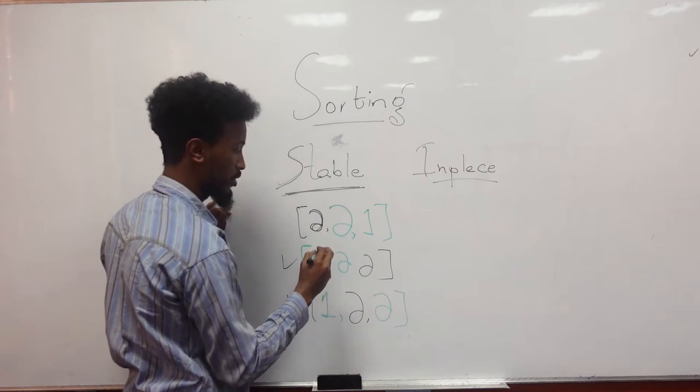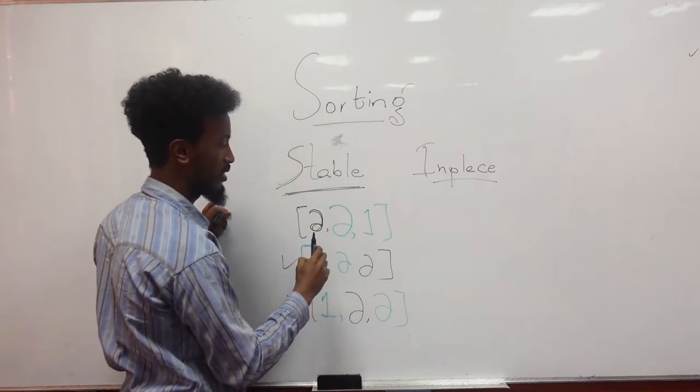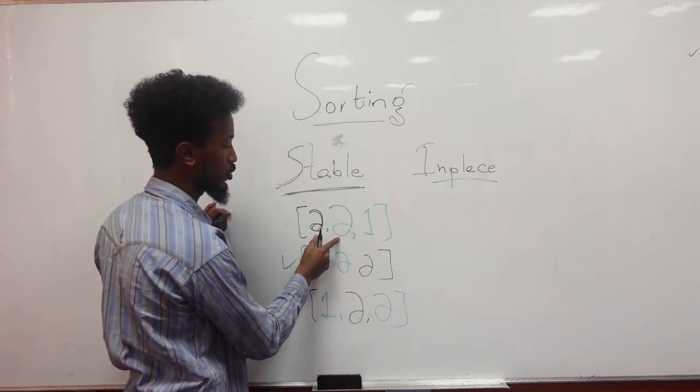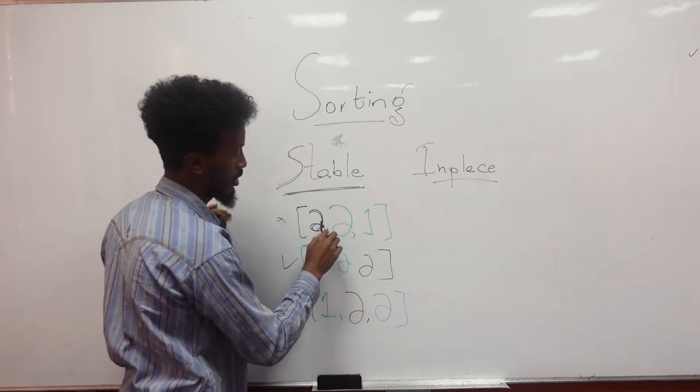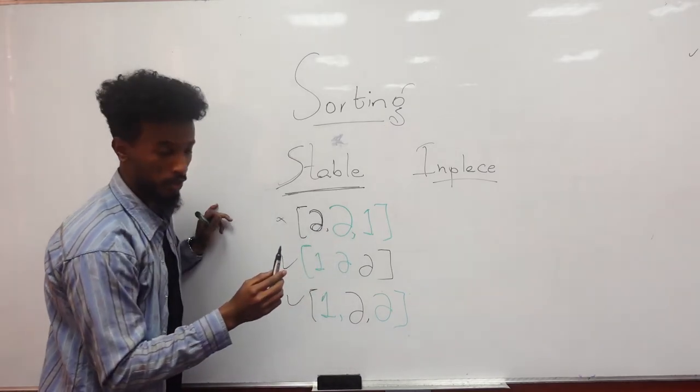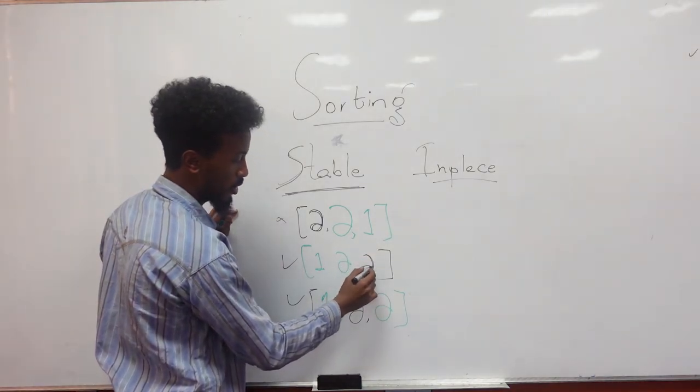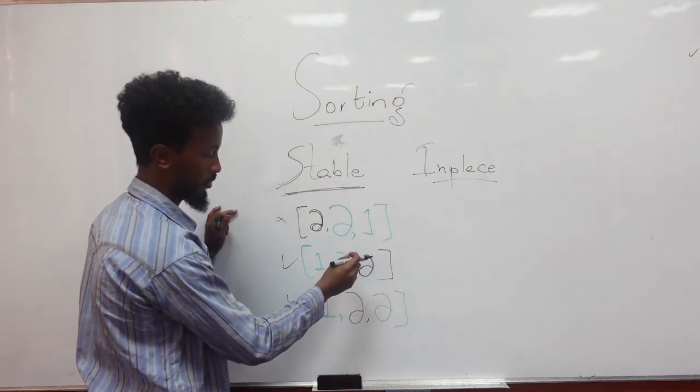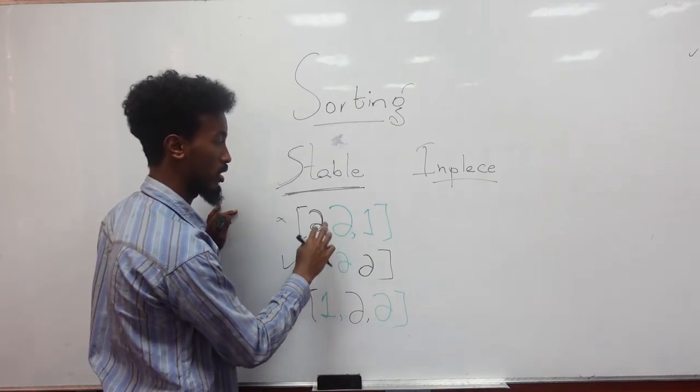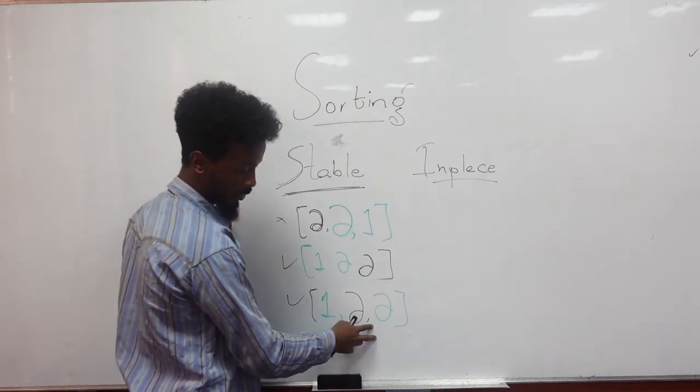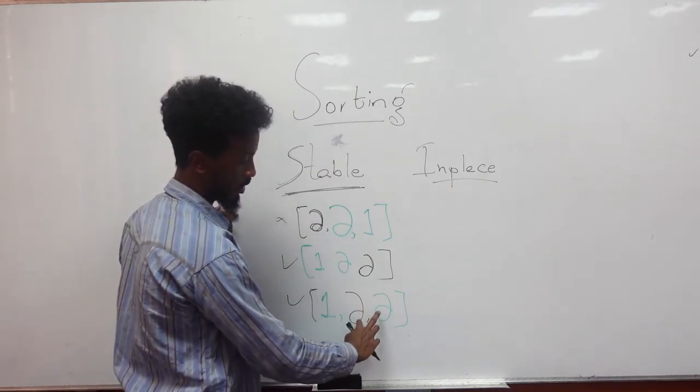And when we see the items that are identical in an unsorted array, the black one appears first. On this one, the black one is appearing last, which means we have changed the order of identical items in an unsorted array. For this one, we didn't change their position.